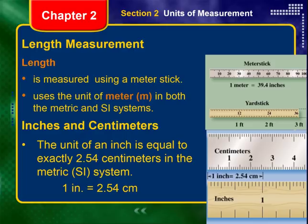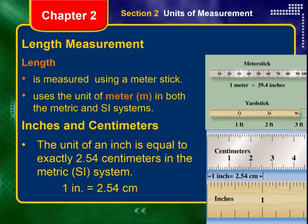Length is one of the objectives. In the SI system, length is measured using a meter stick with the unit of meters. Even though we cannot go directly from inches to meters, we have a simple conversion: one inch is equal to exactly 2.54 centimeters in both the metric and SI systems. Take note — one inch equals 2.54 centimeters.